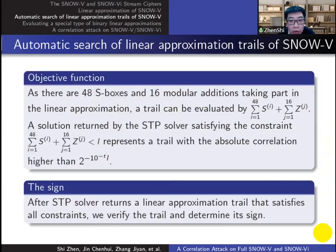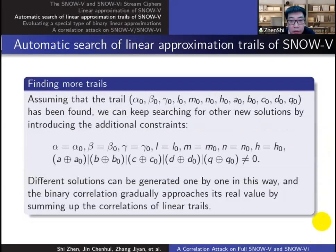The absolute correlation of a trail can be evaluated by summing up degrees of the modular additions and S-boxes. After STP solver returns a linear trail, we verify it, recompute its correlation, and get its sign. We can keep searching for other solutions by adding these constraints to avoid the same solution, and we can approximate the accurate correlation step by step in this way.